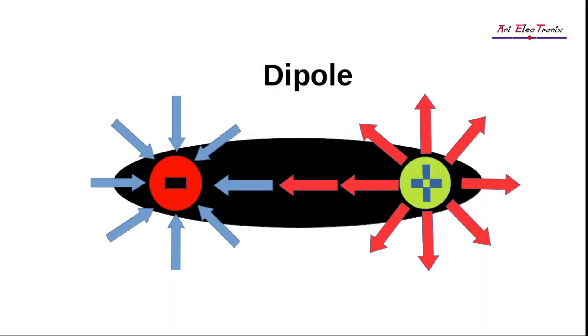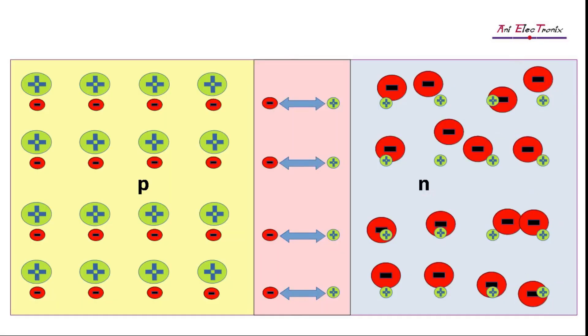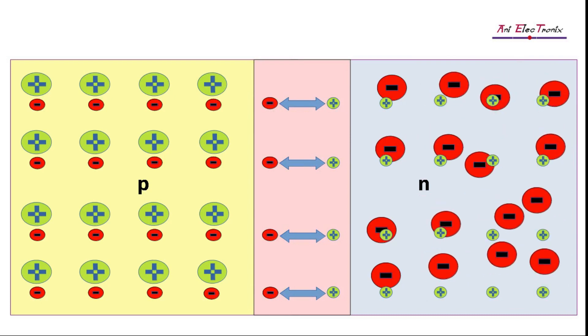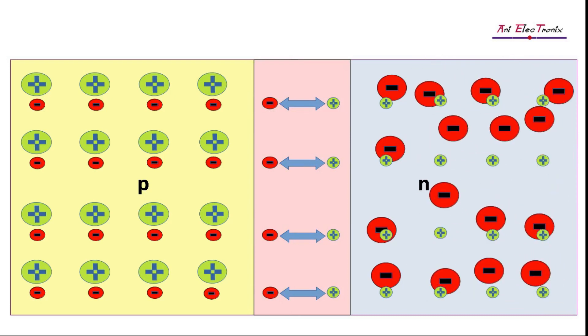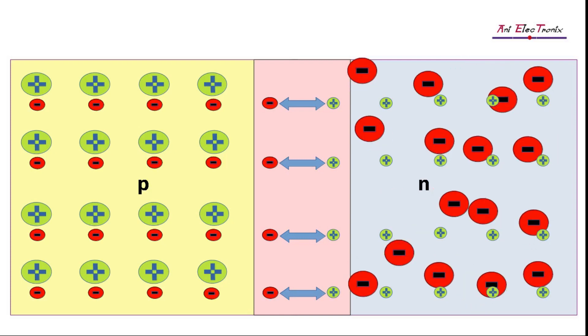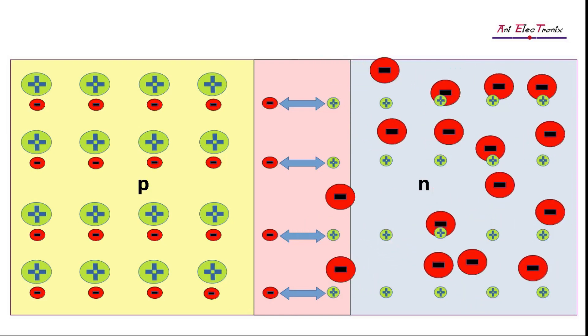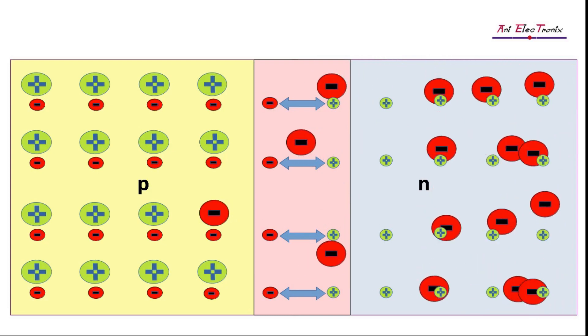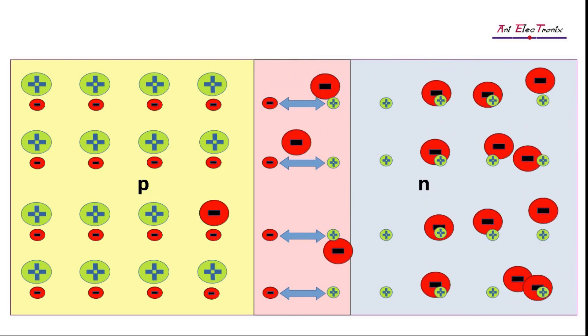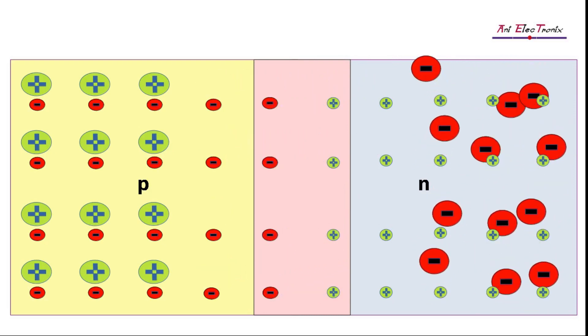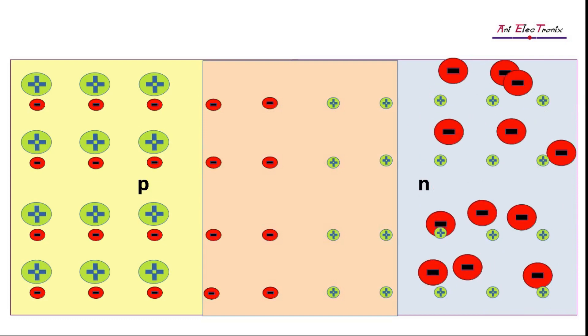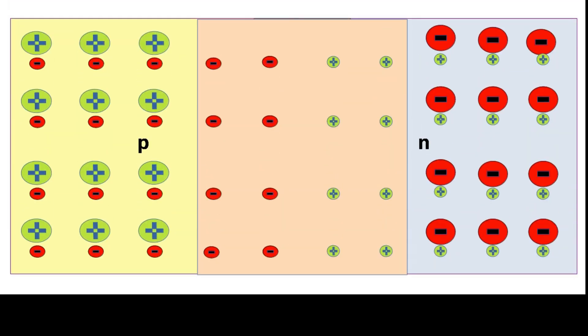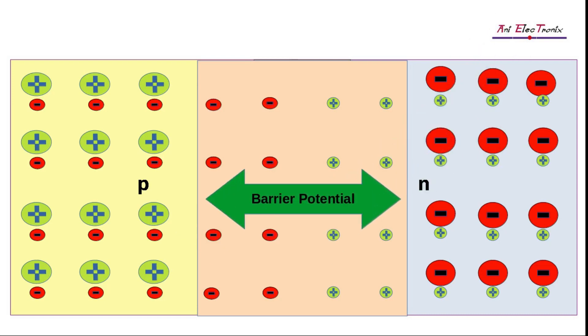Each dipole is linked to an electric field generated by positive and negative ions. As a result, any additional free electrons are repelled if they approach the depletion zone from the N-region and are pushed back towards the N-region by the electric field. This means that the electric field initially attempts to prevent additional electron diffusion across the junction. However, electron diffusion occurs, which aids in the rise of the electric field until it reaches equilibrium. The electric field at the junction formed by the dipole is equivalent to a potential difference and is called barrier potential.